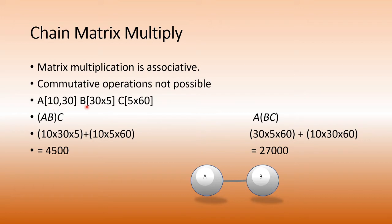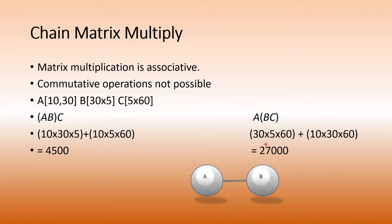If A is size 10×30, B is 30×5, and C is 5×60, then doing (AB)C costs 4500 operations. But if you do BC first followed by multiplication with A, the total cost is 27,000 operations. There is a huge difference between these two orderings.